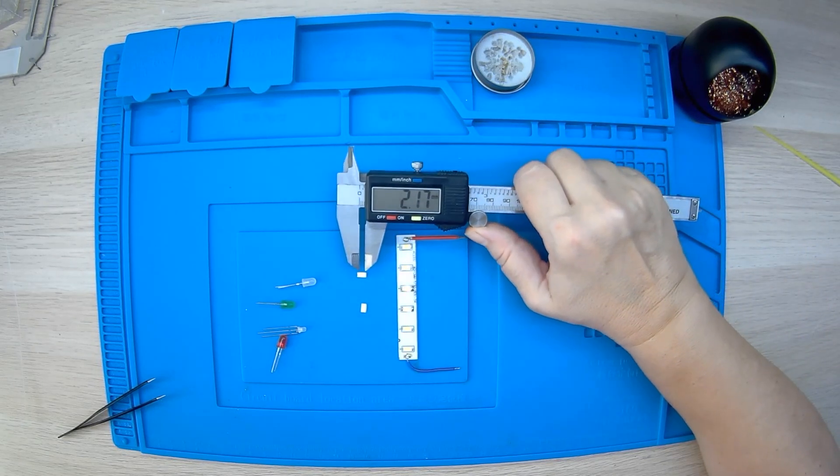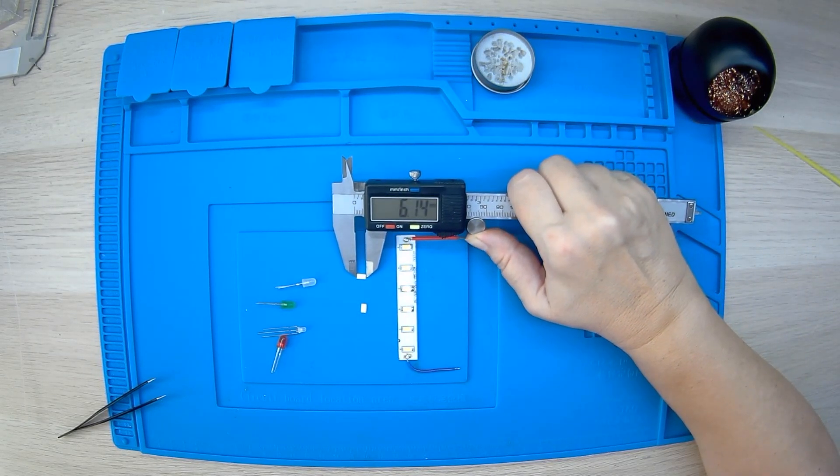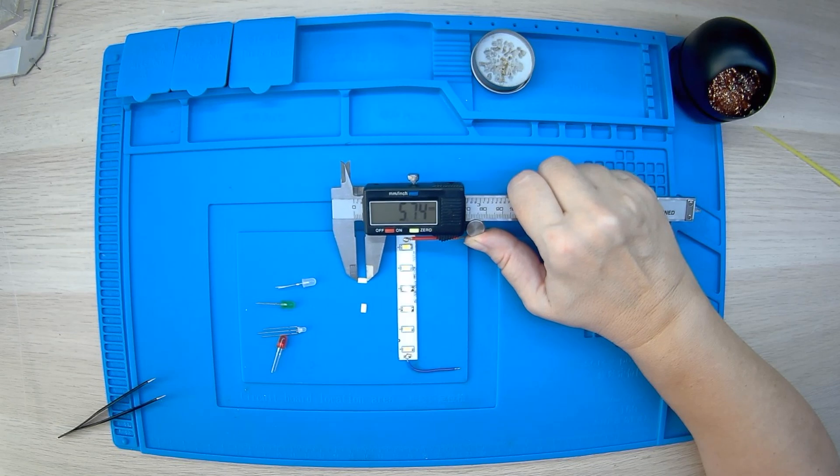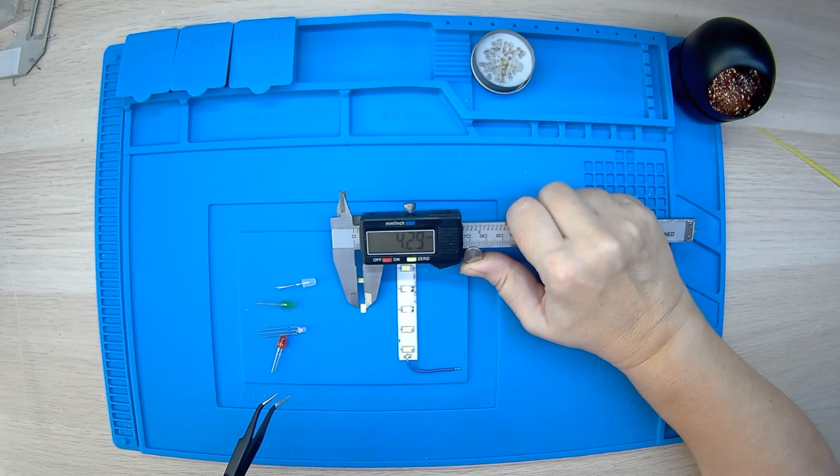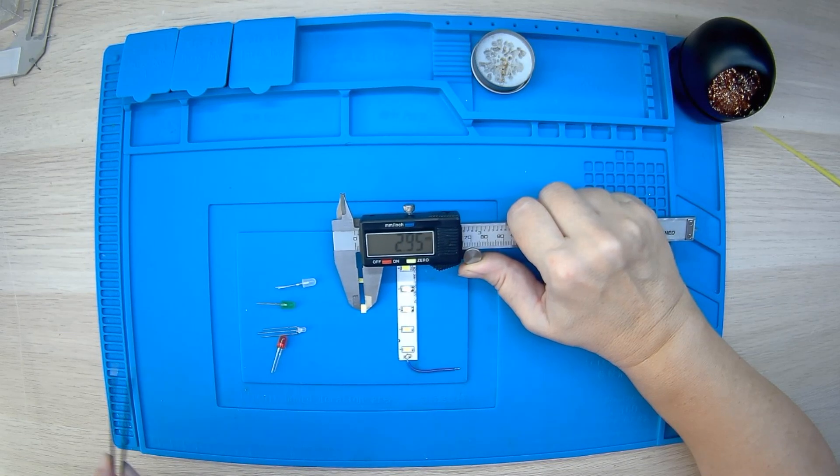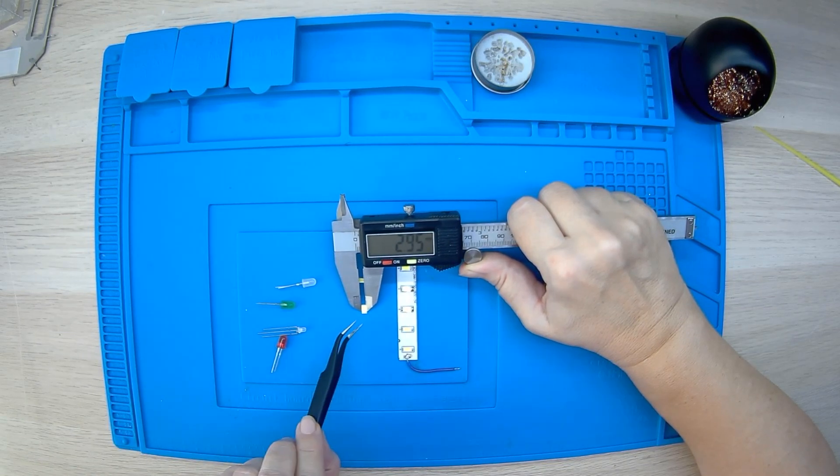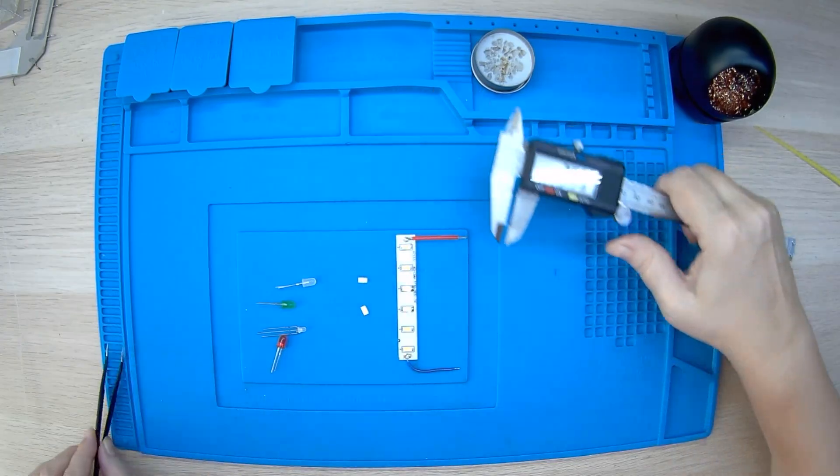What we have here is LED lights. They are made as small rectangles or circles. The type usually corresponds to the size of 5.7 by 3 millimeters. That's the secret of the numbers 5730, and the purchase of new ones must be done using this code.